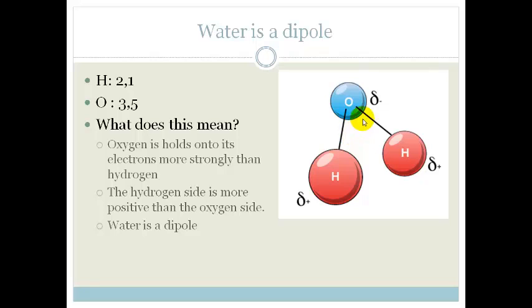So that means that the hydrogen side is slightly positive, and it's more positive than the oxygen side, and that makes water a dipole. So water is an angular dipole, which is covalently bonded, which makes it a very good solvent.